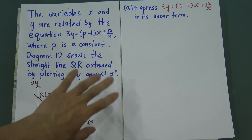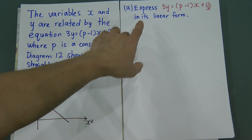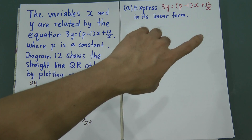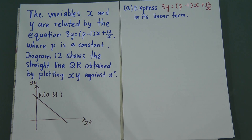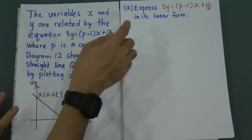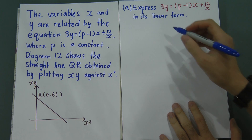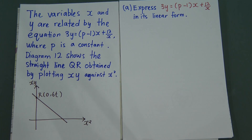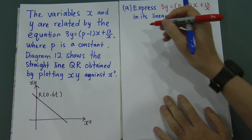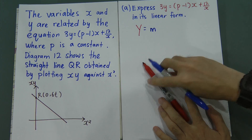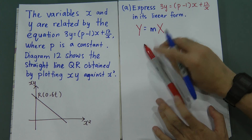In Part A, we are asked to express 3y = (p−1)x + 12/x in linear form. In this chapter, you need to remember the formula Y = mX + c, where Y and X are written in capital letters.